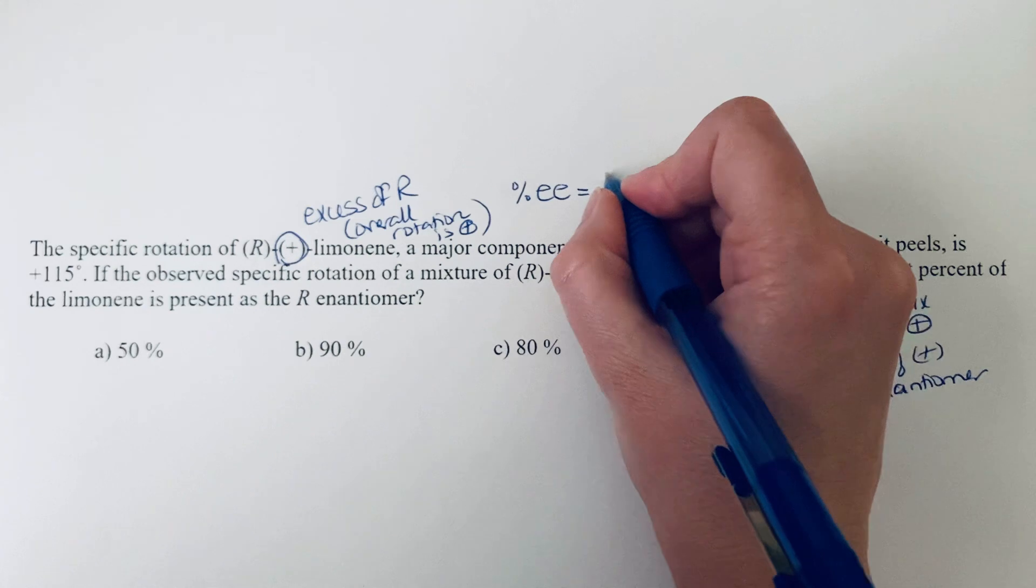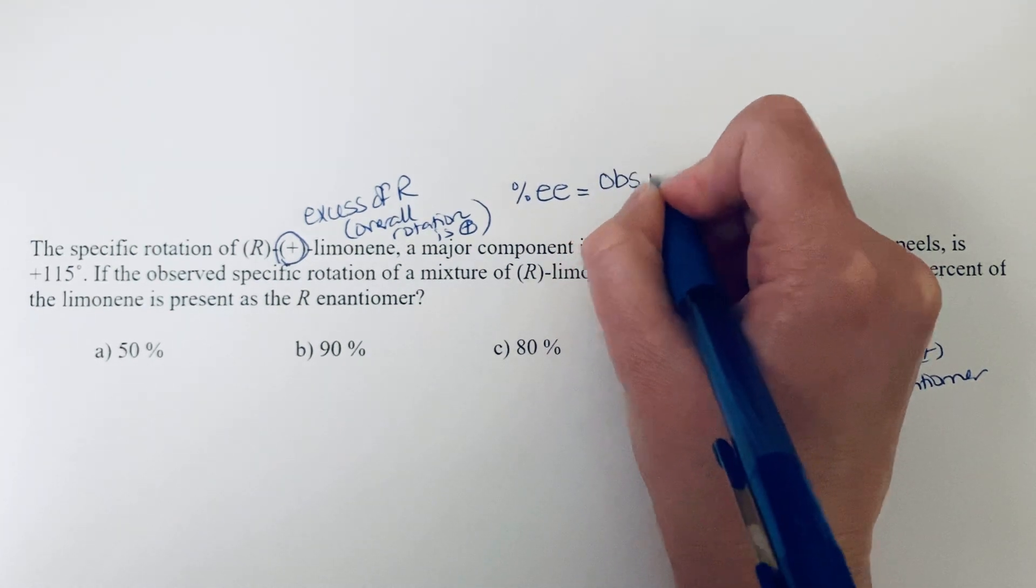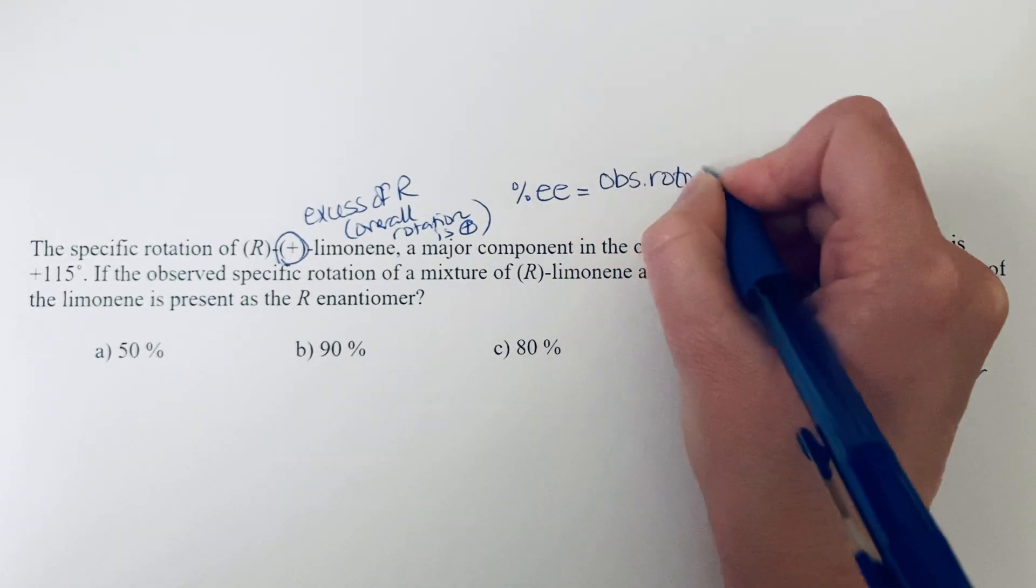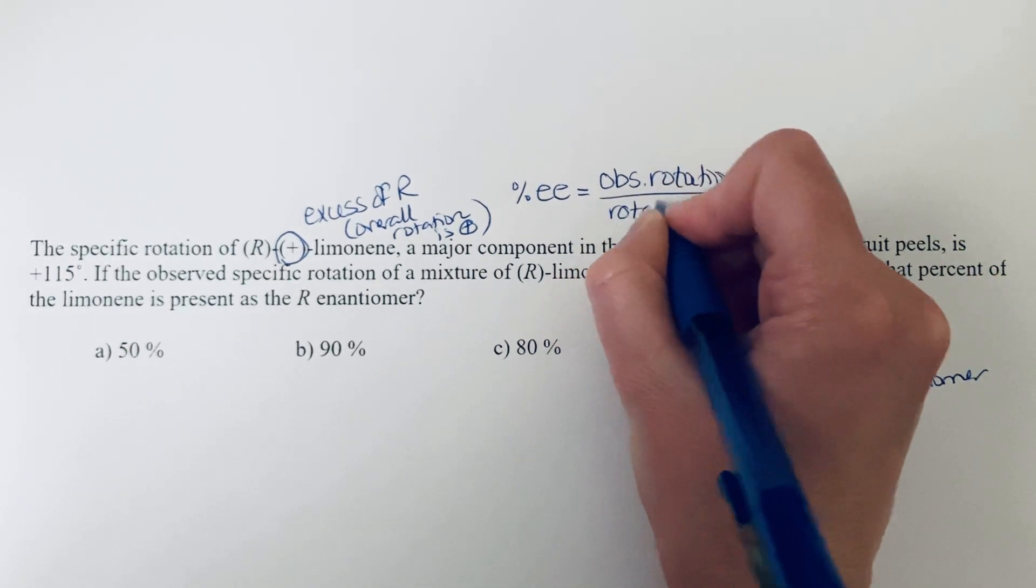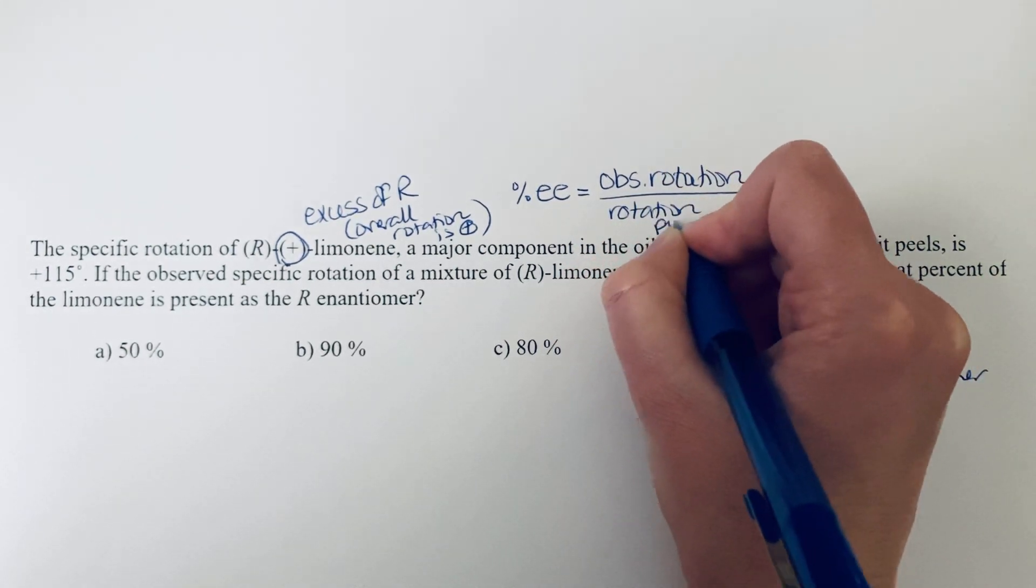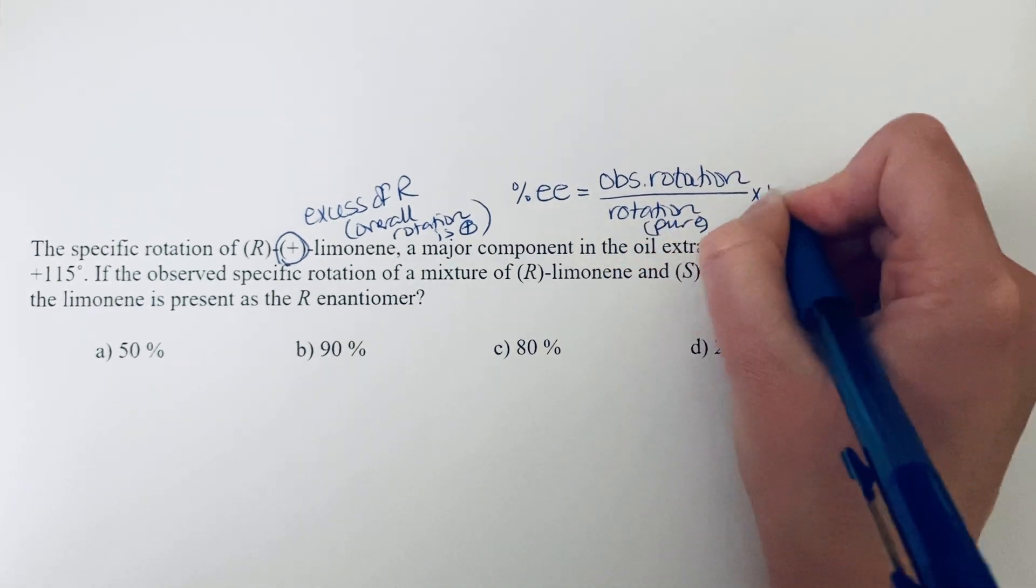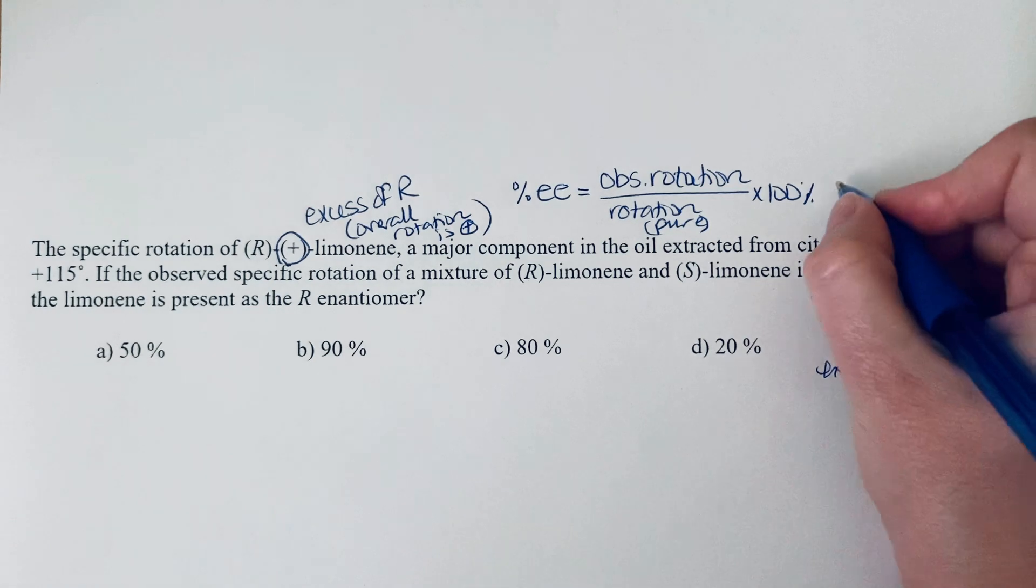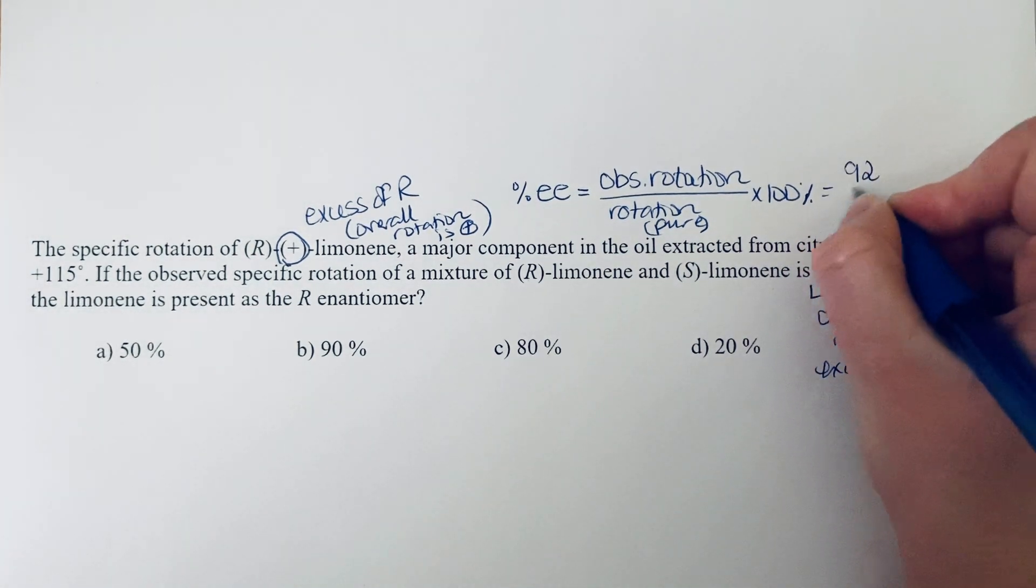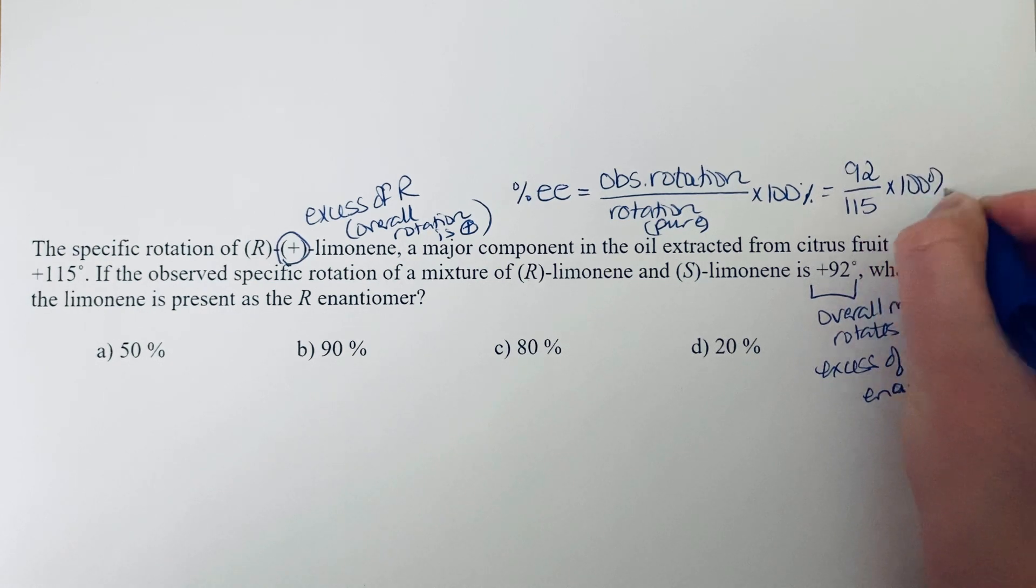So that would be your observed rotation divided by the rotation of the pure enantiomer times 100%. So that means we are looking at 92 divided by 115 times 100%.